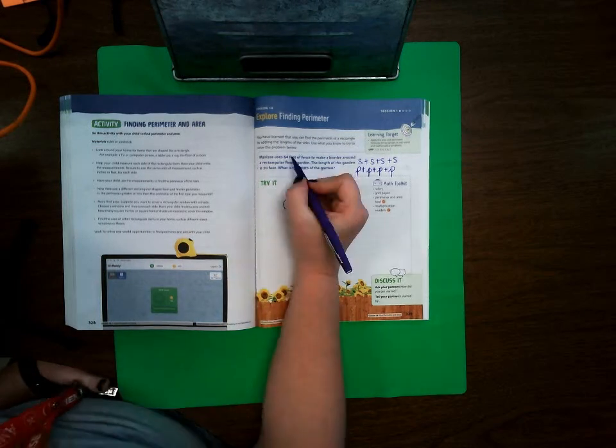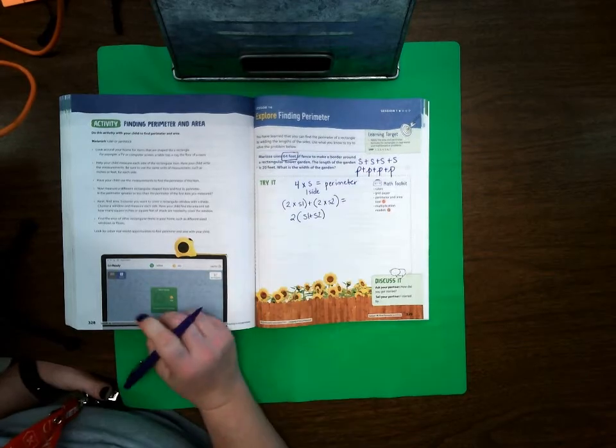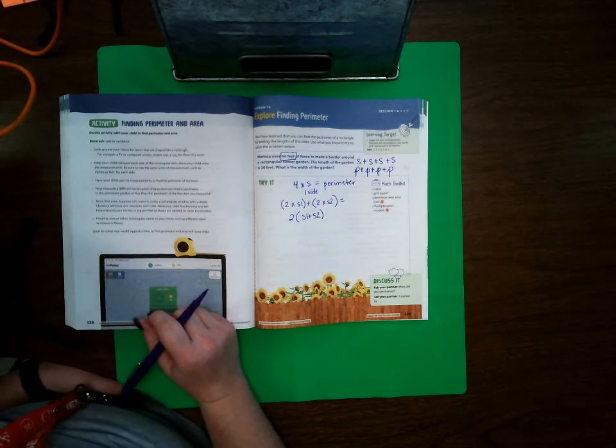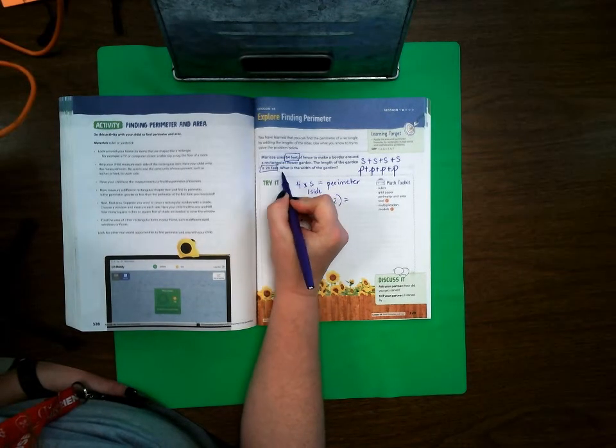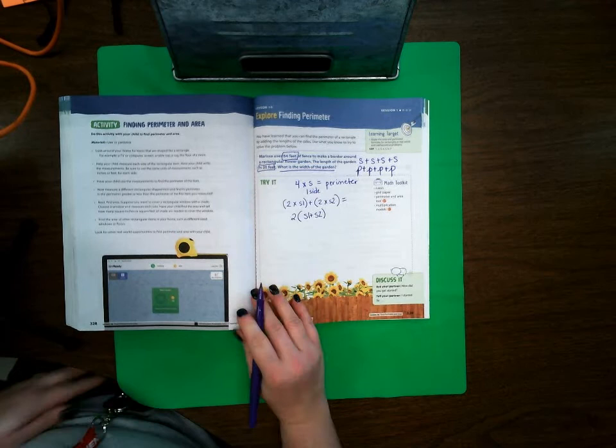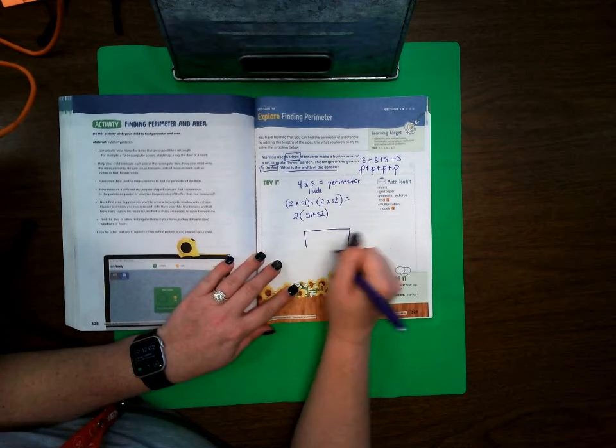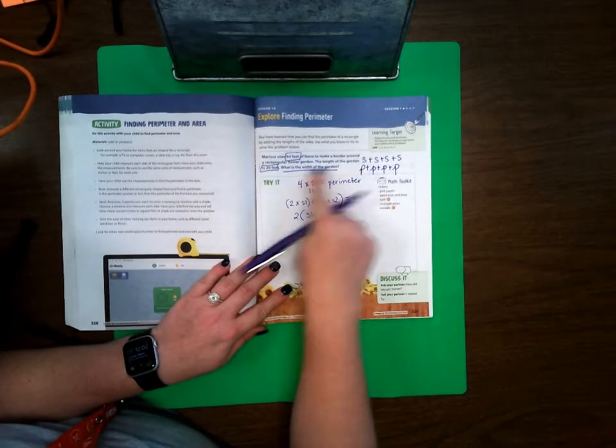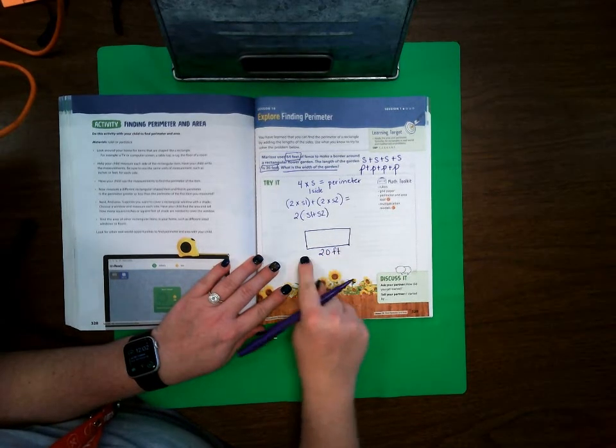Marissa uses 64 feet of fence to make a border around a rectangular flower garden. The length of the garden is 20 feet. What is the width of the garden? Okay, so I'm always going to draw a model when I'm working with area and perimeter. It says that the length is 20 feet, so if this side is 20 feet, I also know that this side is 20 feet.